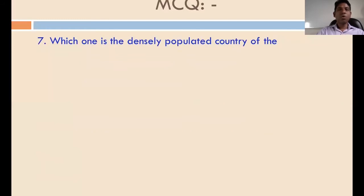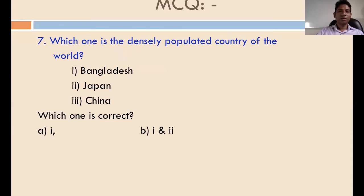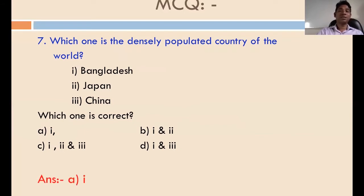Question number seven: which is the most densely populated country of the world? The options include Bangladesh, Japan, and China. The answer is A — Bangladesh is the most densely populated country of the world. Thank you very much.